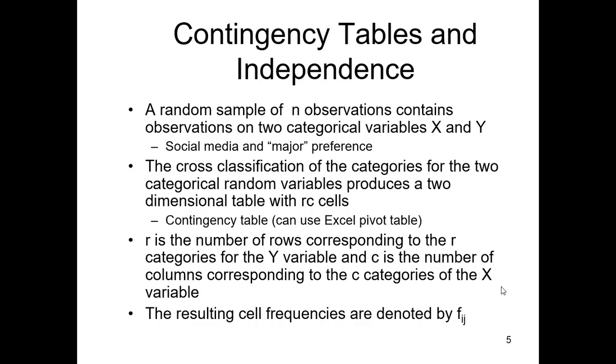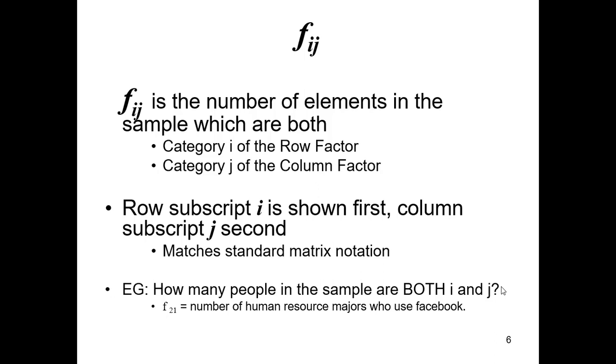A couple of little pieces of information to keep in mind. R is the number of rows corresponding to the number of categories of one of the variables, let's call it the Y variable. C is the number of columns corresponding to the number of categories of the other variable, we'll call it X. And the resulting cell frequency is called f_ij. Standard matrix protocol is that i, the row, is the first and the j, the second number, is columns.